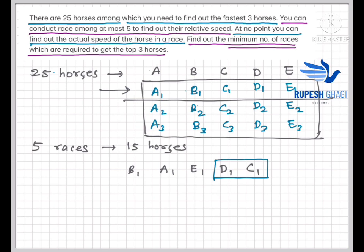By this result we can eliminate D1 and C1 since they're not among the top three. But additionally, since D1 is not in the top three, D2 is slower than D1 and D3 is slower than D2 — so D2 and D3 are also eliminated. Similarly, C1 is not in the top three, so C2 and C3 are also eliminated. After the sixth race we now have only nine horses remaining.